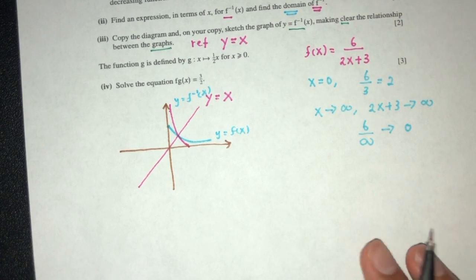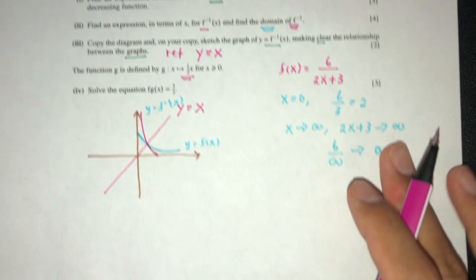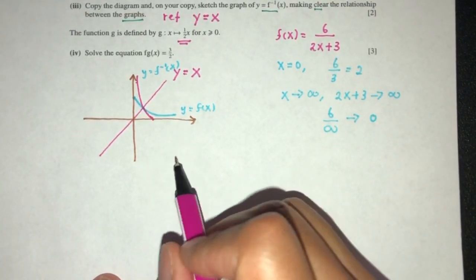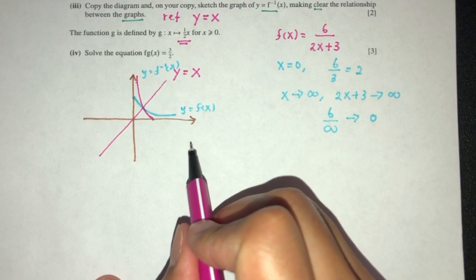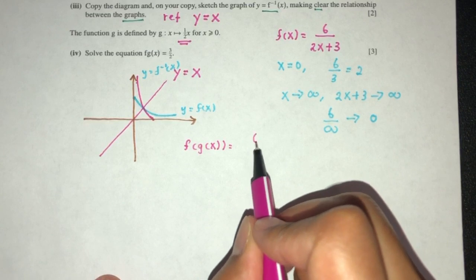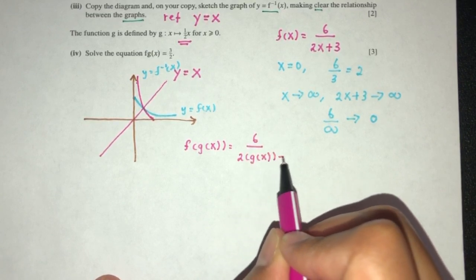Last question, the function g is defined, and we have to solve f of g of x equals 3/2. First, let's find f g of x. That will be 6 divided by (2 times g of x plus 3).